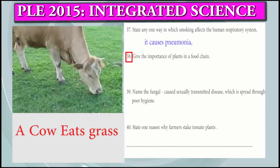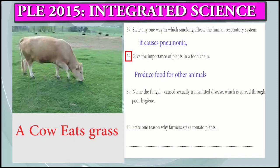Question 38: Give the importance of soil plants in a food chain. They produce food for other animals.